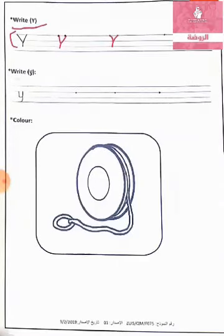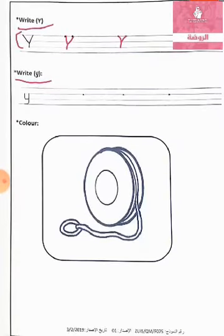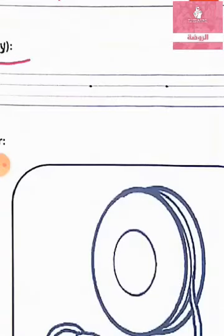And now we want to write small y. We want to write it three times correctly on the lines from line two to line four. Let's write together small y. From line two, down to line three, around to up, and down to line four, around to up. Again, down line two, down to line three, around to up, down to line four, around to up. Small y.